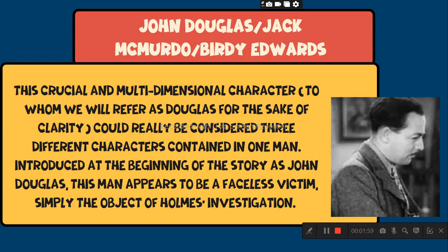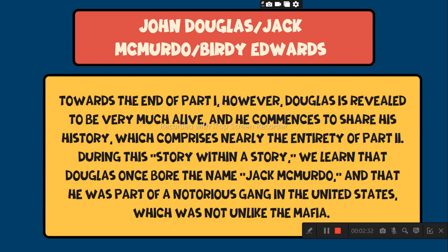Jack McMurdo or Birdie Edwards. This crucial and multidimensional character — whom we will refer to as Douglas for the sake of clarity — could really be considered three different characters contained in one man. Introduced at the beginning of the story as John Douglas, this man appears to be a faceless victim, simply the object of Holmes' investigation. Towards the end of part one, however, Douglas is revealed to be very much alive and he commences to share his history, which comprises nearly the entirety of part two.